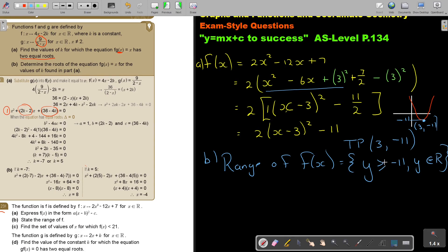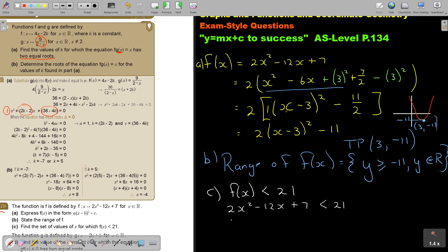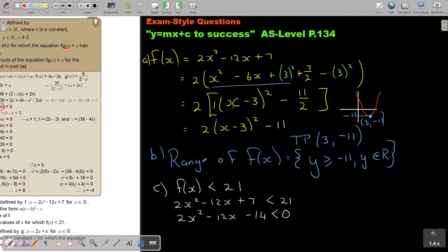Then find the set of values of x for which the function F(x) is smaller than 21. So they just substitute. F(x) is smaller than 21. So 2x squared minus 12x plus 7 is smaller than 21. Bring it over - it's quadratic. Bring that one over, it becomes negative 21 plus 7, that's negative 14. This is now a quadratic inequality.